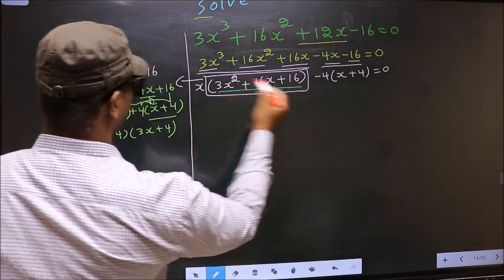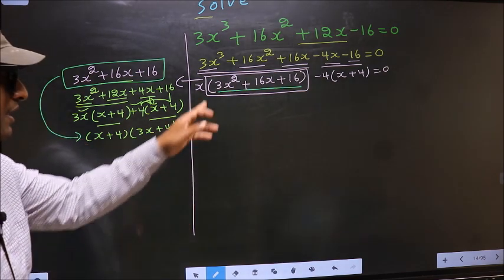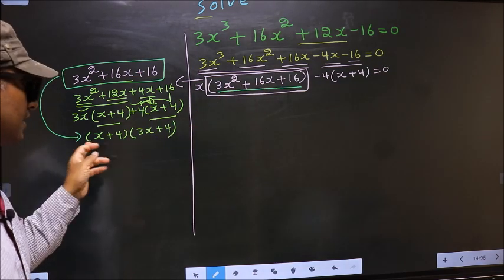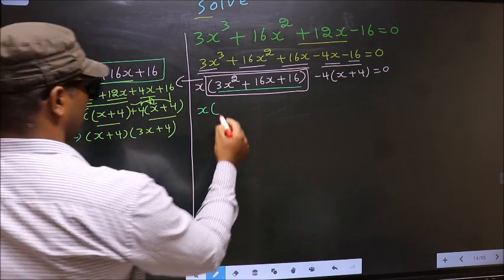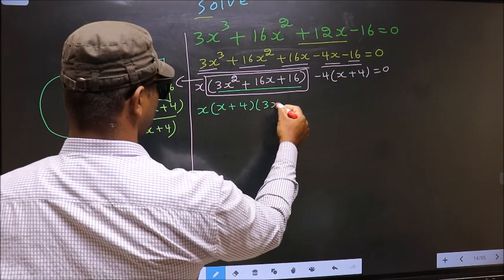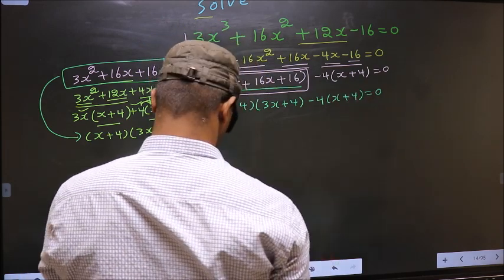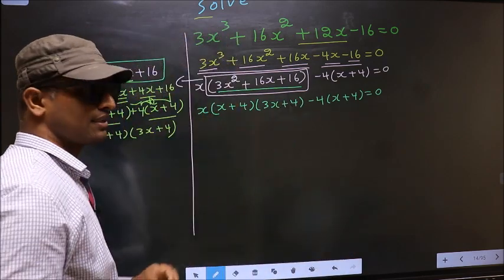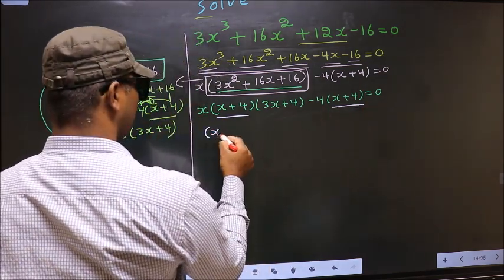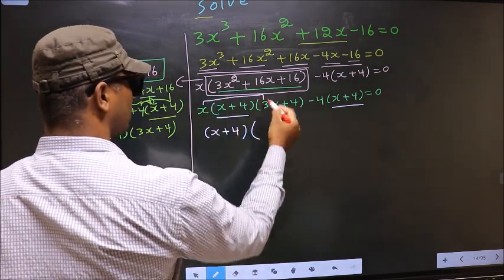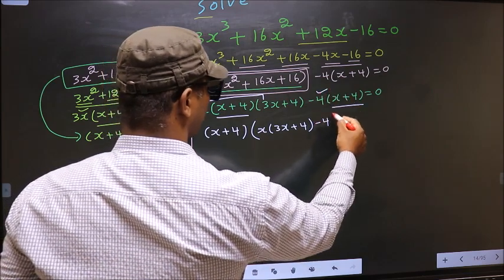In place of this quadratic we should write this factored form. So the equation will change to: x times x plus 4, times 3x plus 4, and over here no change, equal to 0. Now from this entire equation, what can be taken out common is x plus 4. So x plus 4 outside, and you are left with x times 3x plus 4 and minus 4, equal to 0.